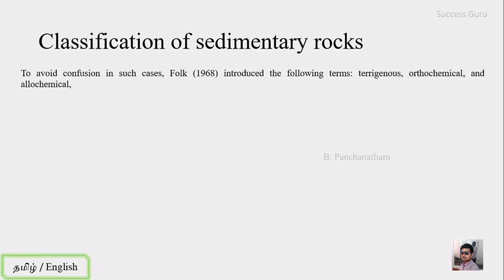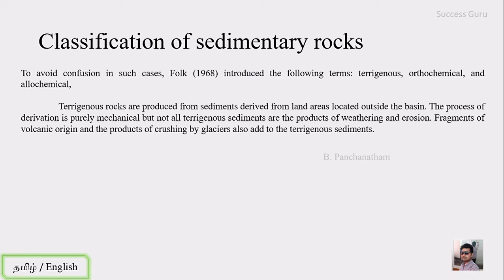To avoid this confusion, Folk in 1968 introduced three terms: pterogenous, orthochemical, and allochemical. Pterogenous rocks are produced from sediment derived from a land area located outside the basin — what we previously called exogenetic rocks. The process of derivation is purely mechanical. Not all pterogenous sediments are products of weathering and erosion; fragments from volcanic origin or glaciers can also form sediments. All material originating outside the basin and transported to it falls under pterogenous sediments.